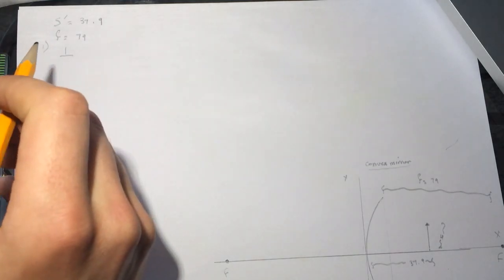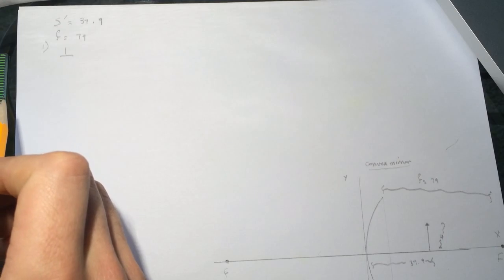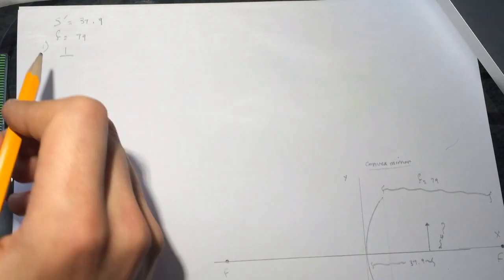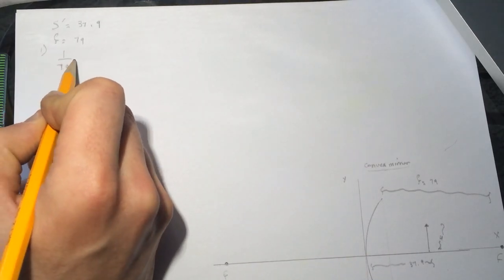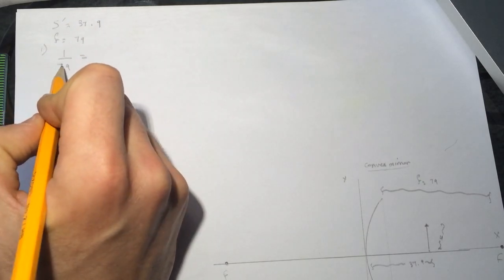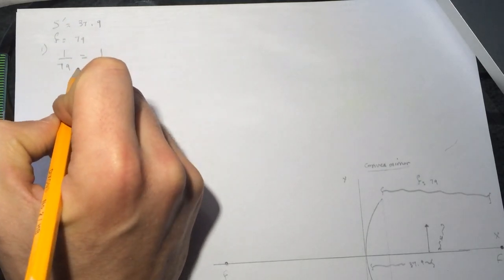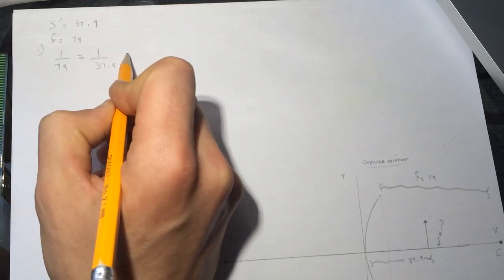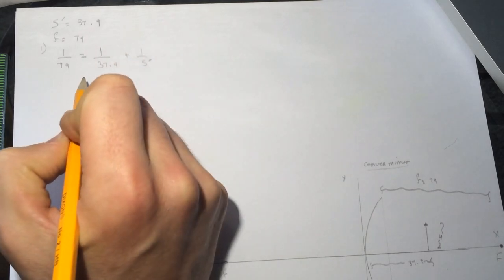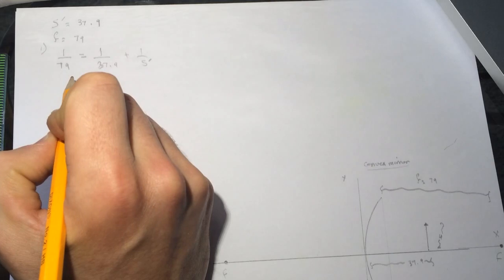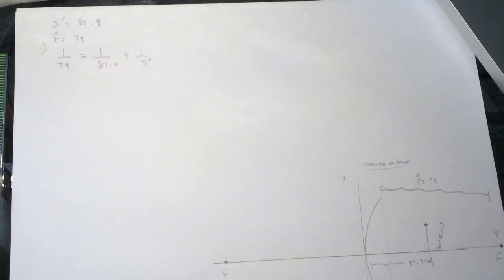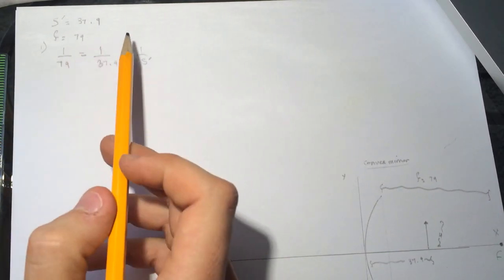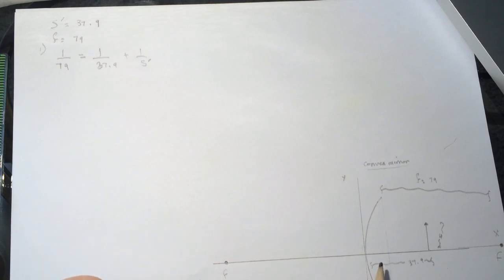So what I'm going to do is, it's 1 over 79. So it's 1 over F. It will be equal to 1 over 37.9 plus 1 over S prime. So we'll get a negative value for this. I kept them positive. I know that the focal point is negative for the convex mirror, but because both of them was on the same side.